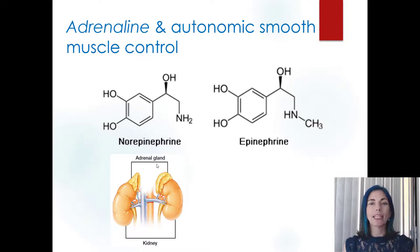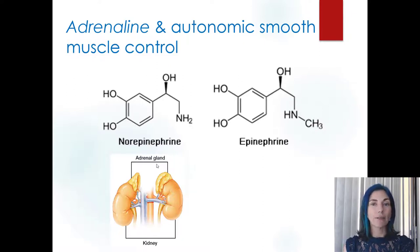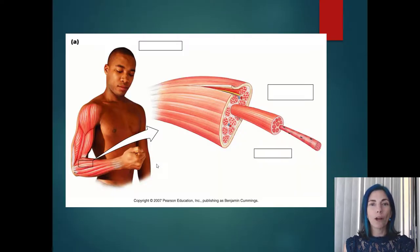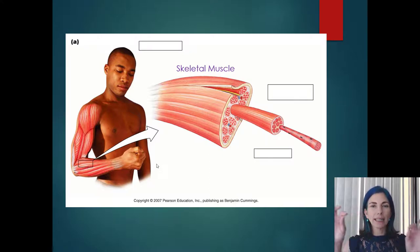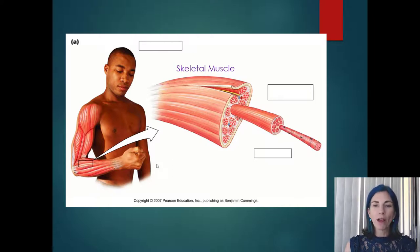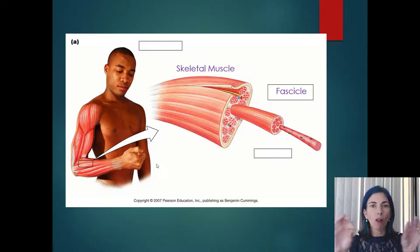Now let's start talking about skeletal muscle anatomy. We're going to spend most of our time on the physiology of skeletal muscle, so we need to understand its anatomy. Starting with the big picture: a skeletal muscle is an organ — like biceps brachii, trapezius, or deltoid. If you cut open a skeletal muscle and look inside, you'll find bundles embedded within it called fascicles.